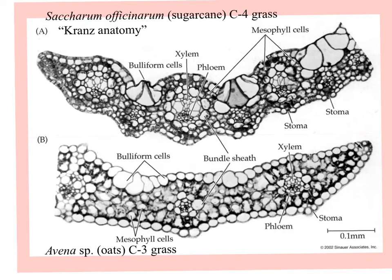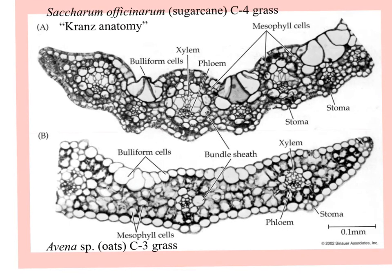Here's the anatomy called Krantz — in German, that means wreath anatomy, like a Christmas wreath. On top is a cross-section of a leaf of sugarcane, a tropical grass, where you can see buliform bundle sheath cells around the vascular bundles making a very pronounced wreath arrangement. At the bottom is a cross-section of an oat plant, a temperate-zone grass. They also have vascular bundles, but much smaller sheaths, because at regular temperatures, carbon dioxide and oxygen won't compete.